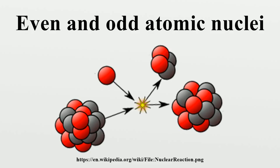Even mass number nuclides, which comprise 153–254, approximately 60% of all stable nuclides, are bosons, i.e., they have integer spin. Almost all even-proton, even-neutron nuclides necessarily have spin zero because of pairing. The remainder of the stable bosonic nuclides are 5 odd-proton, odd-neutron stable nuclides due to pairing effects. Even-even nuclei are much more stable than odd-odd, with one effect being that there are few stable odd-odd nuclides.